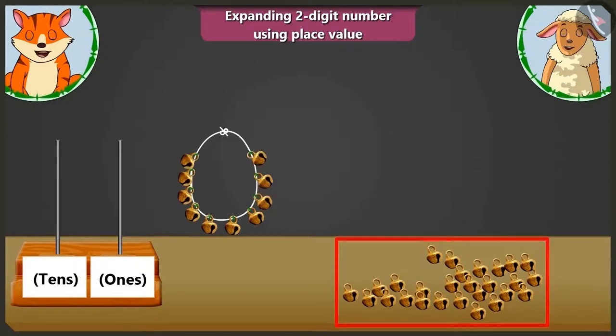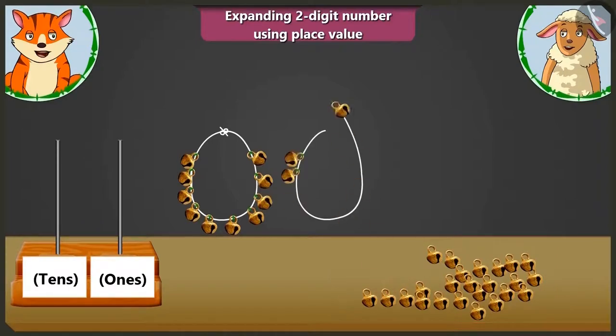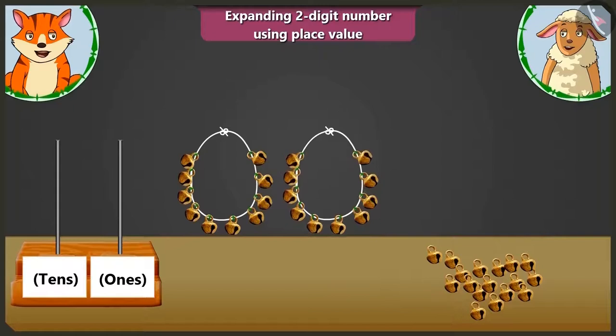Now let me count the anklet beads besides this group. One, two, three, four, five, six, seven, eight, nine, and ten. Here I made the second group of ten.